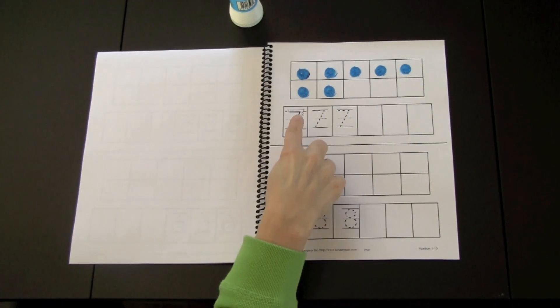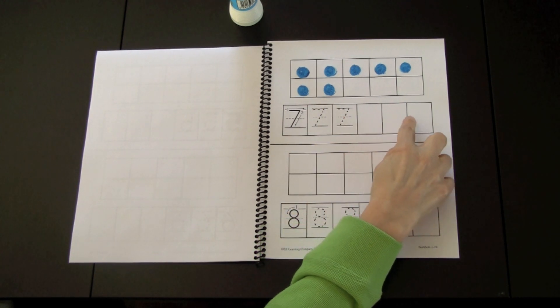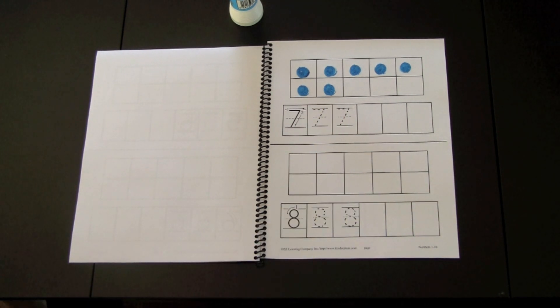And then they would look at how the number seven is formed, go over the dotted lines, and then practice three of them on their own, giving it their best try.